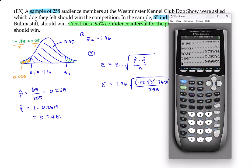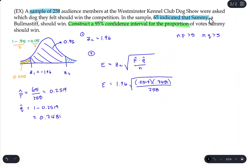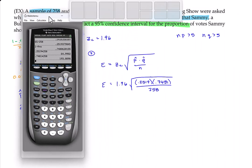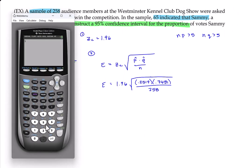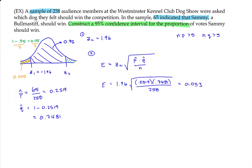So n times q, these are both bigger than 5. So we're fine. Okay. Now, margin of error. To get the margin of error, we'll do 1.96 times the square root of 0.2519 multiplied by 0.7481, and then divided by 258. So that would be 0.053. Okay. So that's my margin of error.